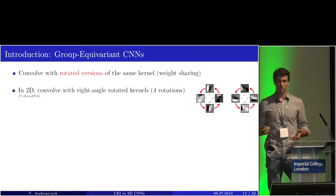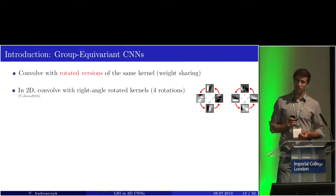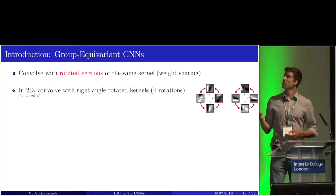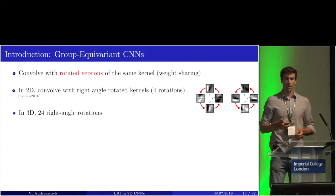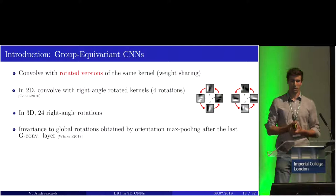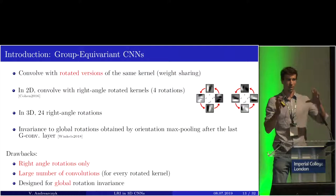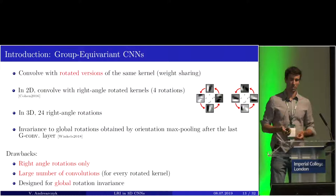Another method is group equivariant CNN, in which we convolve the inputs with rotated versions of the same kernel — weight sharing over orientations. In 2D, we convolve with right-angle rotated kernels, rotating the kernel four times. In 3D, it's more complex with already 24 right-angle rotations. Invariance to global rotations is obtained by max pooling after the last convolutional layer. The drawbacks are: it's designed only for right-angle rotations, involves a large number of convolutions, and is designed for global rotation invariance, not local.